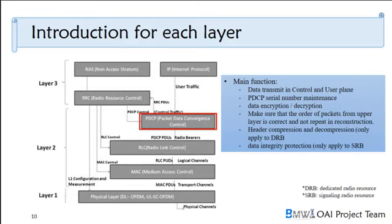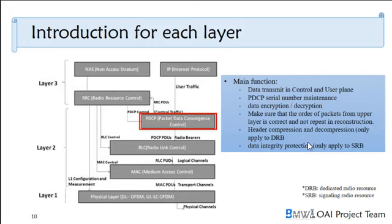In the PDCP layer, the main function is data transmission in the control plane and user plane. In the control plane, it can transmit commands from RLC and implement the relative configuration from RLC. In the user plane, we receive IP data from the upper layer, package IP data into a packet, and transmit it to the RLC. It also makes sure the order of packages from the upper layer is correct and not repeated in reconstruction.